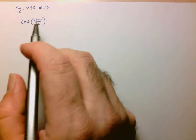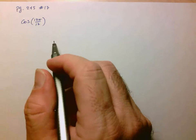Hi folks, we're going to take a look at 245 number 17. Here they want us to determine the exact value of cos of 13π over 12.